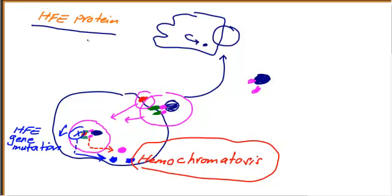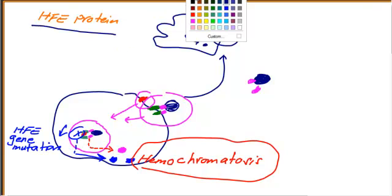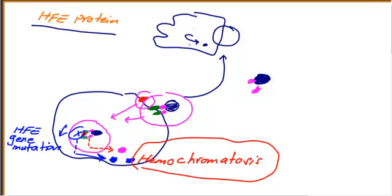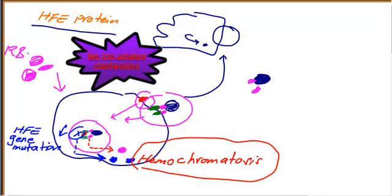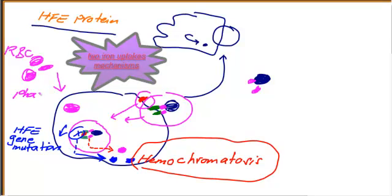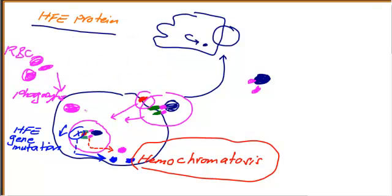So HFE protein is the second regulator after hepcidin. One final point: iron can enter macrophages via transferrin and transferrin receptors, but there is another more common way — through red blood cells. Red blood cells go inside macrophages by phagocytosis, which also leads to the release of iron inside the macrophage.